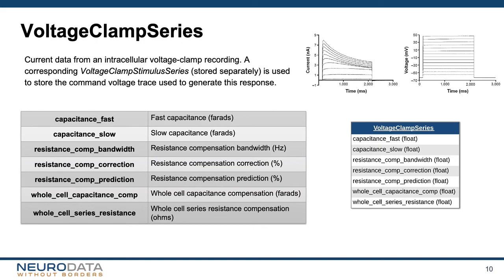The voltage clamp series neurodata type extends patch clamp series with metadata fields specific for voltage clamp recording sessions. These include amplifier settings for capacitance compensation and resistance compensation. I should note that these fields are not intended to be a complete specification of all amplifier settings that might be adjustable in a recording session. However, further work on defining additional metadata for these experiments is an active area of development in NWB.